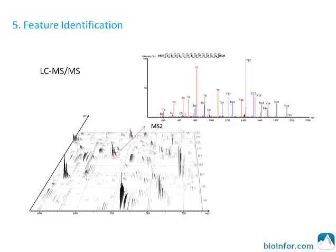The last step is peptide feature identification, done using the MS/MS spectra associated with the feature. PEAKS label-free quantification is seamlessly integrated with PEAKS database search for peptide identification, thus data analysis is much easier than switching software or exporting from one format to another.